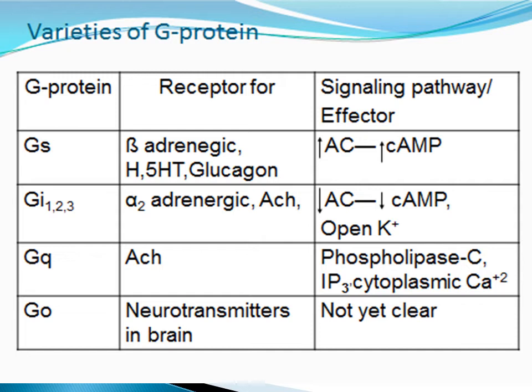Broadly, we can classify signaling mechanisms into four types: ligand-gated ion channels, which are also known as ionotropic receptors; G-protein coupled receptors, or metabotropic receptors; enzymatic receptors, which can be further classified into tyrosine kinase receptors and cytokine receptors; and finally, receptors regulating gene expression, or transcription factors. Steroids act through this last kind of signaling mechanism.